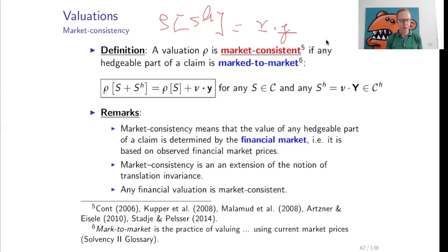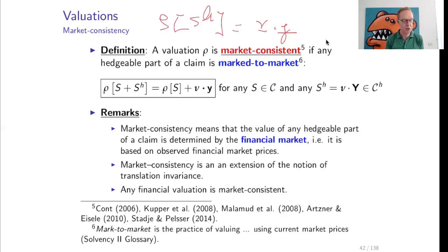Intuitively, market consistency means the following: if you have a claim S plus SH, you can either bring the whole claim to the insurer and pay rho of S plus SH, or hedge the part SH yourself at price nu times Y and bring the residual S to the insurer at price rho of S. Market consistency guarantees that both approaches give the same total cost — insurance pricing is in agreement with financial market prices.